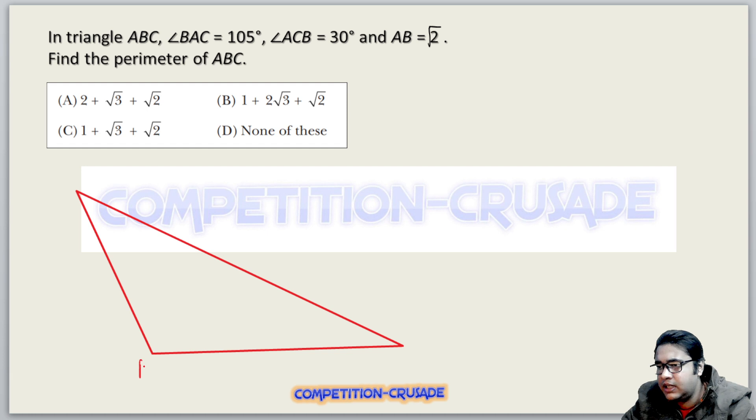Angle BAC is given as 105 degrees, angle ACB is also given as 30 degrees. Let's write that. And AB is root 2.